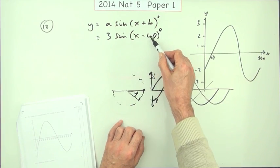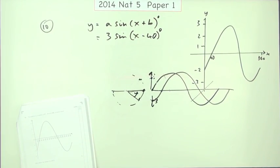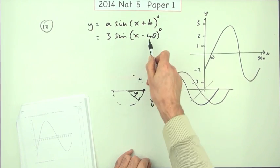That's why it looks as if, when you've got a minus 40, it looks as if the graph's going forward 40. But it's really because it takes 40 degrees before it can get started, because it's starting 40 behind.